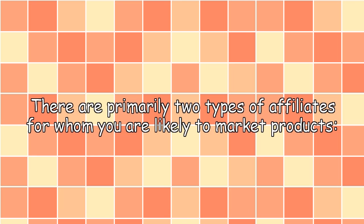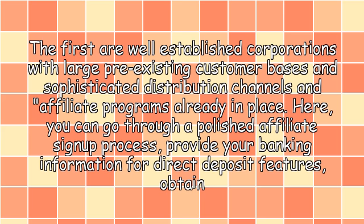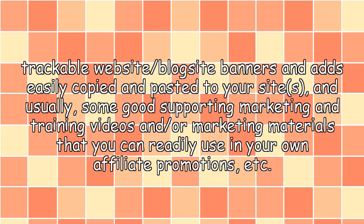There are primarily two types of affiliates for whom you are likely to market products. The first type offers trackable website and blog site banners and ads that are easily copied and pasted to your site, and usually some good supporting marketing and training videos or marketing materials that you can readily use in your own affiliate promotions.